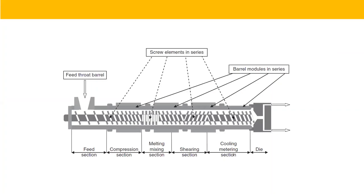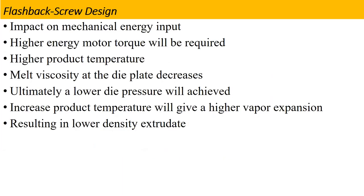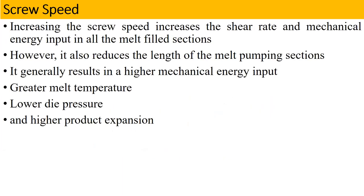In the same way, we saw that the conveying section has deep channel depth. For screw flights: the conveying section requires single flights, but the melting and metering sections require double or triple flights. Then in today's lecture we studied that the screw speed significantly affects our extrusion process. If you increase the screw speed, the shear rate will increase and mechanical energy input will be affected. The length of the melting or pumping section will also reduce.